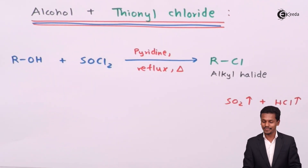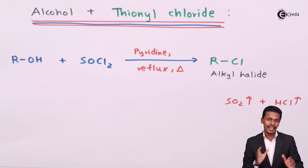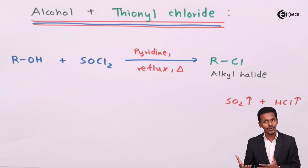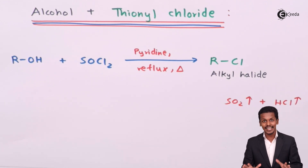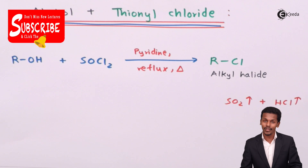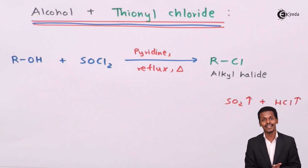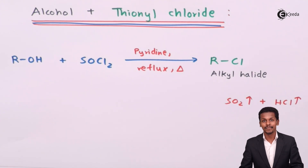The specialty of this reaction is that when alcohol is treated with thionyl chloride, the byproducts SO₂ and HCl both vaporize, leaving only the alkyl halide. This makes it the best method to prepare an alkyl halide from an alcohol compared to using HCl, HBr, HI, or phosphorus halides. That concludes this lecture — I hope you now understand how to prepare alkyl halides using different reagents and conditions. Thank you for watching, and don't forget to subscribe.